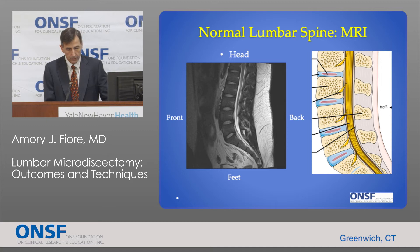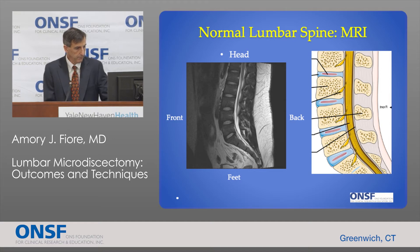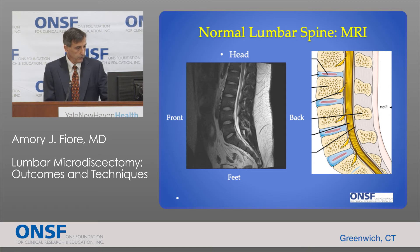Here we're looking at lumbar MRI imaging, which is important because this is the imaging we use to diagnose lumbar disc problems and to treat them. This is an MRI image of the lumbar spine — here we have the head, the feet, front and back. This is looking from the left side. You can see the discs, which are light, and the bones in between. This is the space for the nerves. The white is spinal fluid and the nerves are dark. And this is just a diagrammatic representation of the same thing.